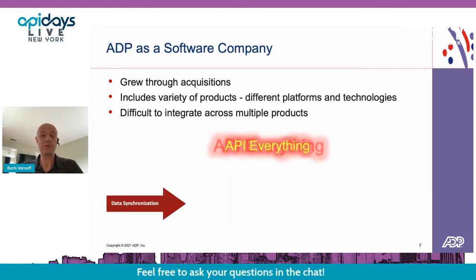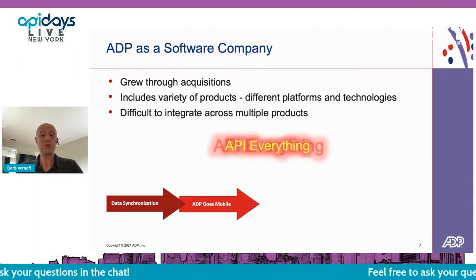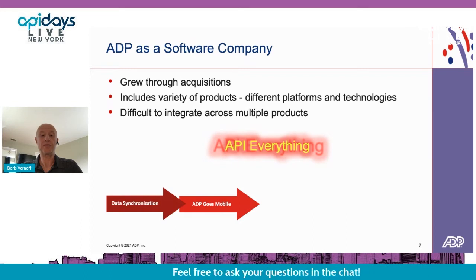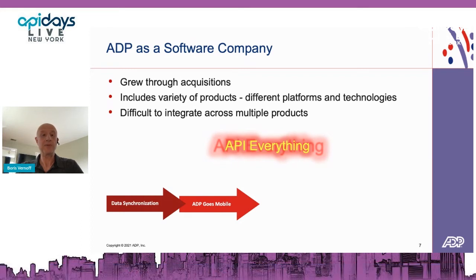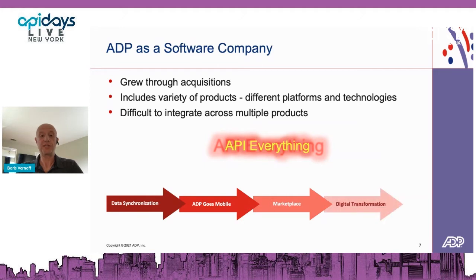Here's a high-level overview of the ADP API journey. It started with data synchronization across multiple products — that was the first use of APIs. Then came ADP mobile solutions, delivered on an aggressive timeline and constantly gaining popularity. Later, APIs exposed externally enabled direct access to ADP's data and capabilities, and so the marketplace was born. Finally, each product went through a complete tech refresh or digital transformation to ensure every product is API enabled, and some products are still going through that process now.